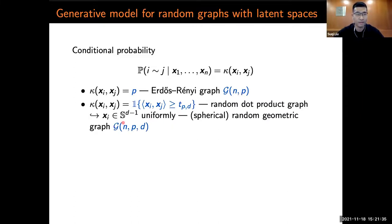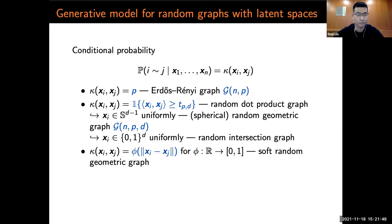In particular, when x is uniformly distributed on the d-minus-1 sphere, this is called the spherical random geometric graph G(n,p,d). We can also consider when xi is uniformly from the discrete cube, and this is the random intersection graph. And more generally, we can consider a non-decreasing function over the Euclidean distance. Then this is the soft random geometric graph, which has been studied intensively in physics and wireless communication.